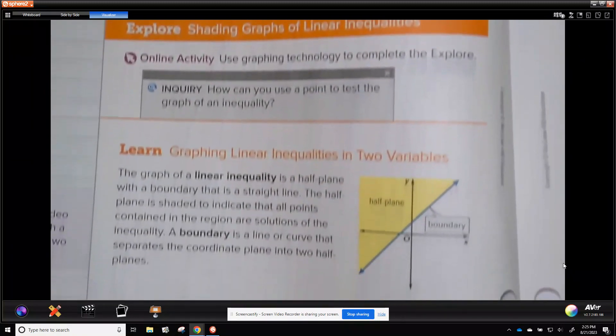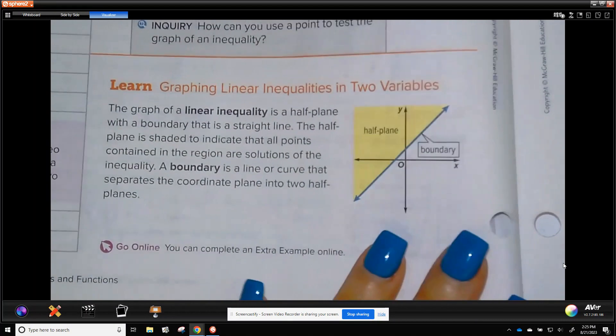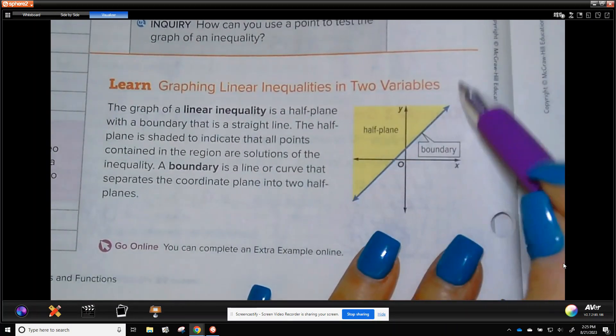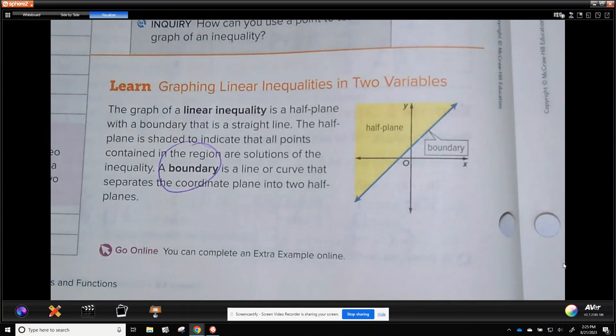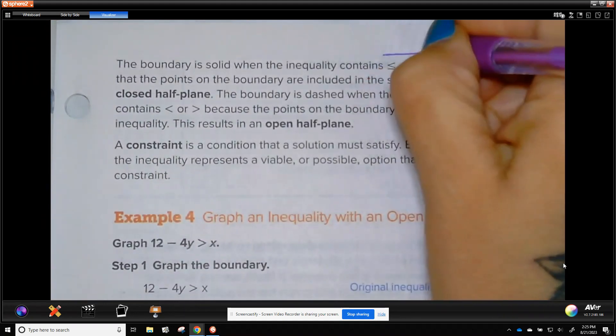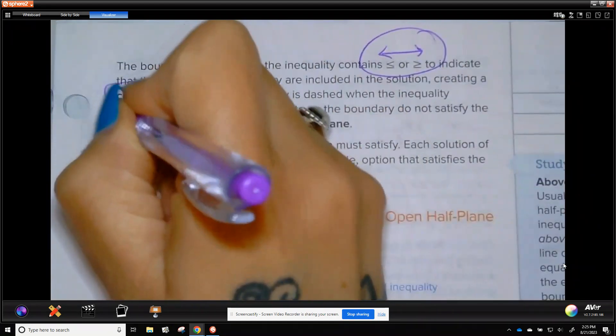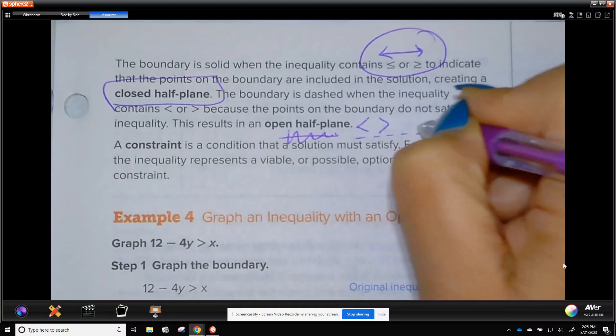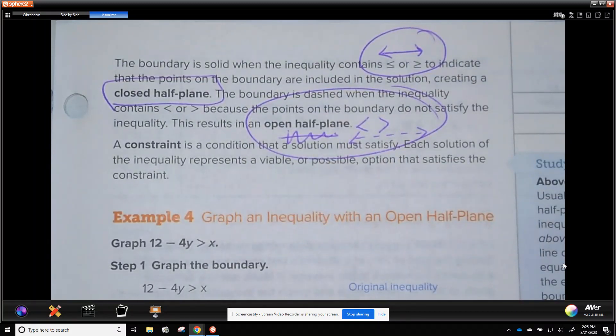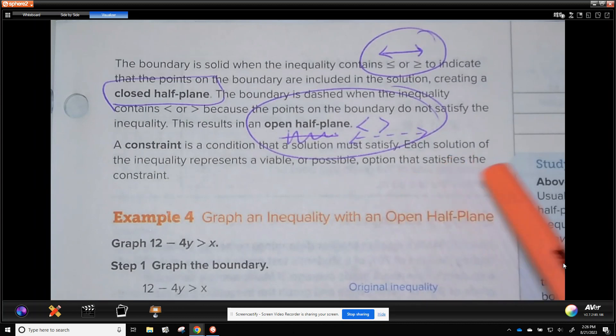Okay, now we're getting into inequalities. So inequalities with two variables. We're going to have a line component, which may be solid or dashed. And that is your boundary. And then you're going to have this shaded area, which is your half plane. Sometimes the shading part, when we have the coordinate plane, doesn't look like half. But it is half plane. So a closed half plane is a solid line. And you use those symbols. That is a closed half plane. And an open half plane uses less than or greater than. And it's not a solid line. It is a dashed line. So open half plane. A constraint is a condition that a solution must satisfy. So a constraint is all the possible answers that satisfy the equation. Each solution represents a possible option that satisfies the constraint.